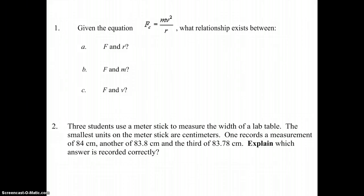We have the equation fc equals mv squared over r. And the question asks, what's the relationship that exists between f and r, f and m, and f and v? fc equals mv squared over r is the equation for centripetal force. We'll see that in a reference table when we get them soon.